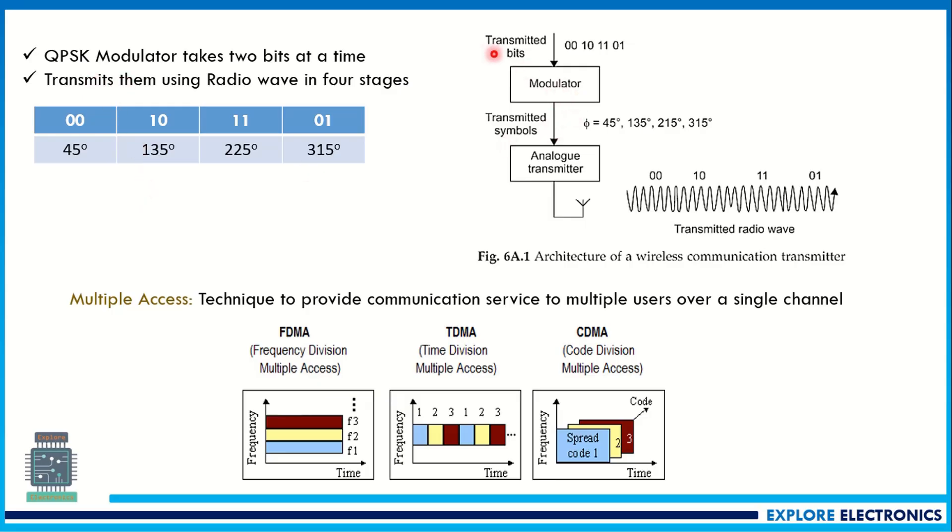Here you can see there are transmitted bits like this. There is a modulator. According to these values there will be a shift in the phase like this. So that is what QPSK is. And then coming to the second part of the question.